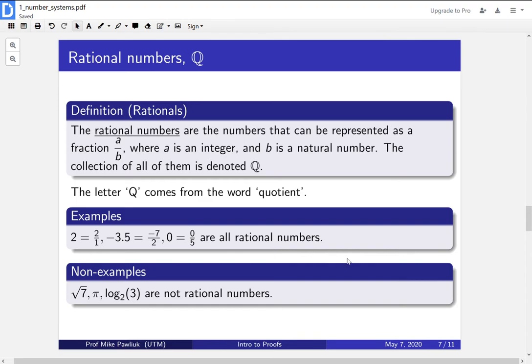Some non-examples, square root of 7, pi, and log base 2 of 3 are all not rational numbers. Don't worry for now if you don't remember what logarithms do. You can look them up if you want. We'll see this a little bit later on in the course. Pi and root 7 are things that you've seen before.